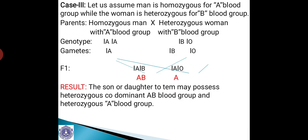Case 3: let us assume the man is homozygous for A blood group while the woman is heterozygous for B blood group. The parents are a homozygous man with A blood group and a heterozygous woman with B blood group. Their genotypes are IAIA for the man and IBI0 for the woman. The man produces only one type of gamete — IA — whereas the woman produces two types of gametes — IB and I0 — because she is a heterozygous individual.